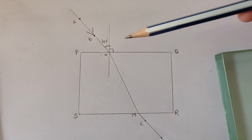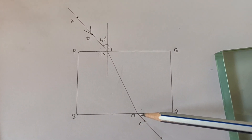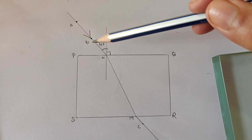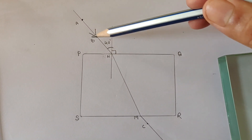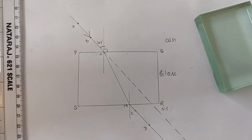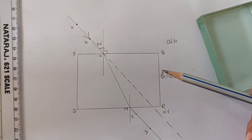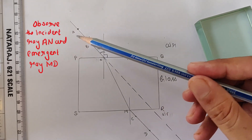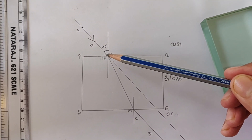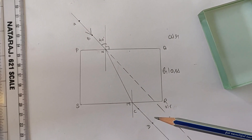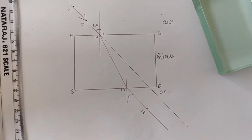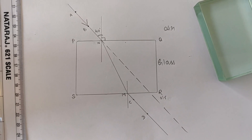As you can see, the line joining N and M is not a straight line. Let's draw the normal for this refracted ray and a dotted straight line to show the original path. This is the diagram we get. Let's observe the incident ray and the emergent ray and draw our conclusions.